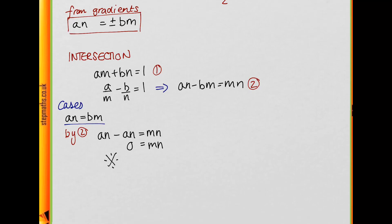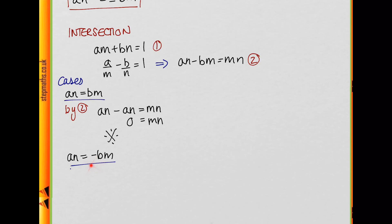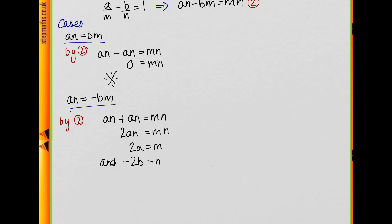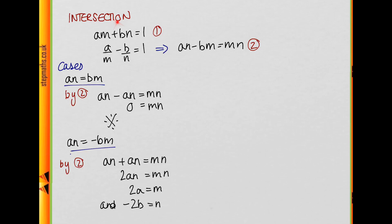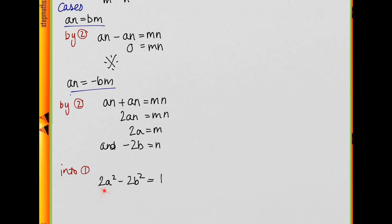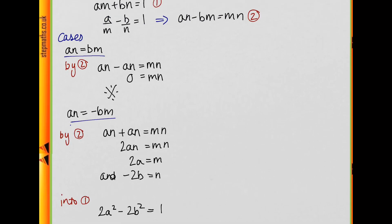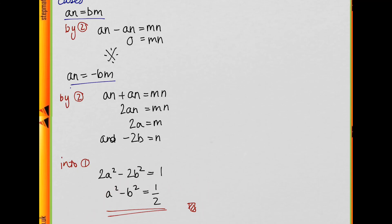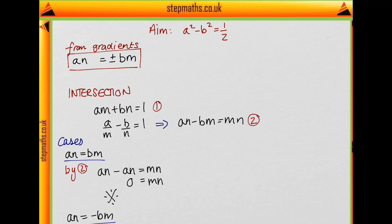So we consider the second case: an = -bm. Substituting into equation 2 gives an + an = mn, so 2an = mn, and dividing by n (which is not 0) gives m = 2a. Similarly, substituting -bm gives -2bm = mn, so m = -2b. Substituting m = 2a and n = -2b into equation 1: a(2a) + b(-2b) = 1, giving 2a² - 2b² = 1. Dividing through by 2, we finally get a² - b² = 1/2, which is exactly what we needed to show.